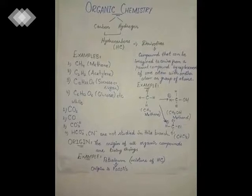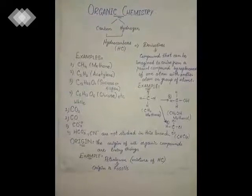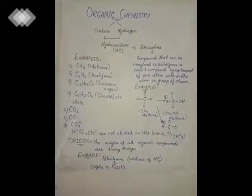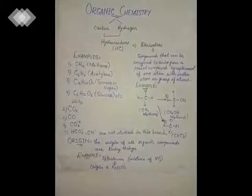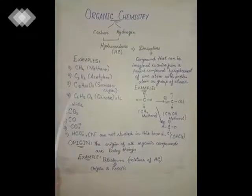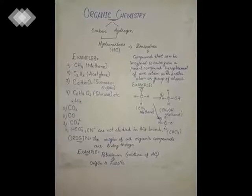The third example is sugar or sucrose, which we use in our houses. Its composition is carbon, hydrogen, and also a small amount of oxygen — it contains 12 atoms of carbon, 22 atoms of hydrogen, and 11 atoms of oxygen. Similarly, glucose contains 6 atoms of carbon, 12 atoms of hydrogen, and 6 atoms of oxygen. We call these organic compounds because the ratio of carbon and hydrogen is more than that of oxygen.